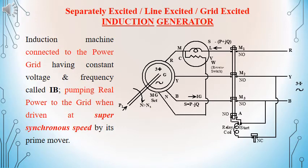First, we will be discussing the separately excited or line excited or grid excited induction generator. The induction machine is connected to a grid where we have a constant voltage and constant frequency system, and it is also called an infinite bus. The induction generator will be pumping the real power to this grid, and an induction machine will be operating as induction generator when it is driven at a speed above synchronous speed or at super synchronous speed.